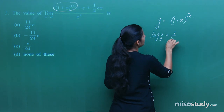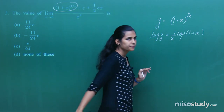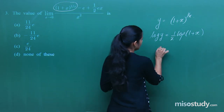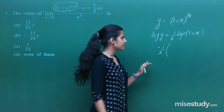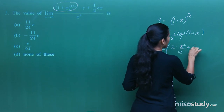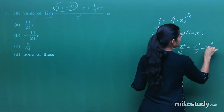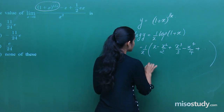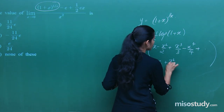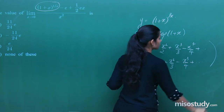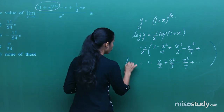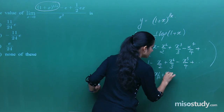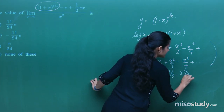Using the expansion log(1+x) = x − x²/2 + x³/3 − x⁴/4 + …, we get log y = 1 − x/2 + x²/3 − x³/4 + … So y = e^(1 − x/2 + x²/3 − x³/4 + …), which splits as e · e^(−x/2 + x²/3 − x³/4 + …).